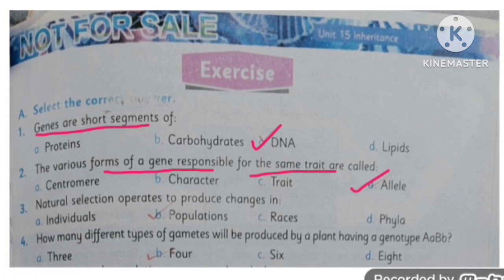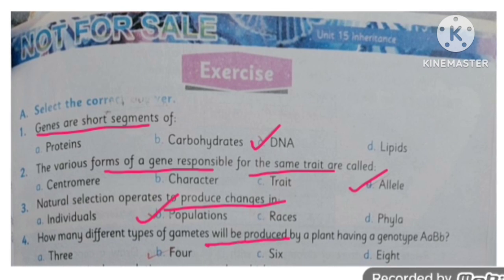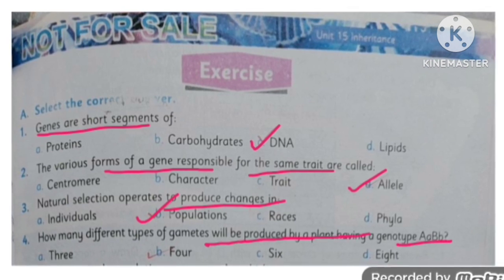MCQ number 3: natural selection of traits to produce changes in population. How many different types of gametes will be produced having a plant genotype? This is going to produce 4 gametes.